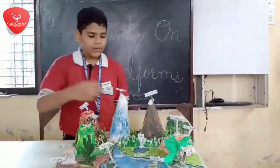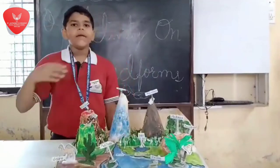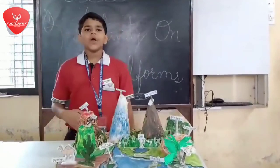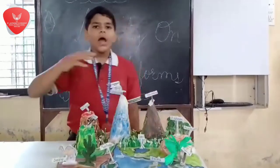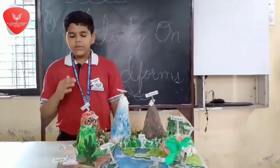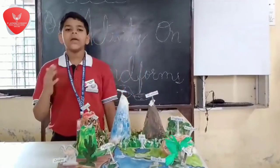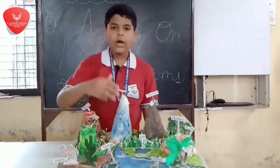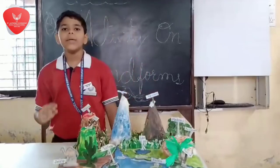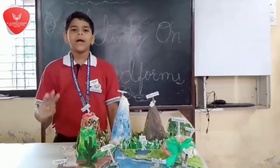A lake is a water body surrounded by land. An island is a landmass surrounded by water. A peninsula is surrounded by water on three sides.